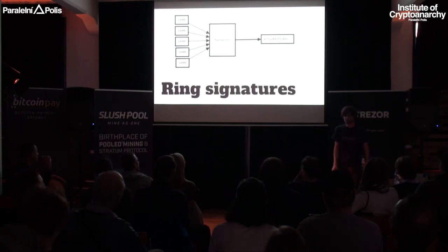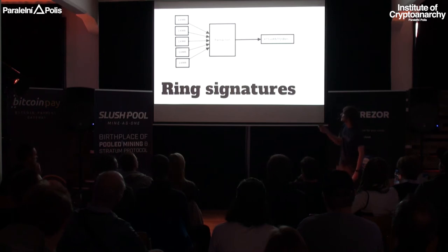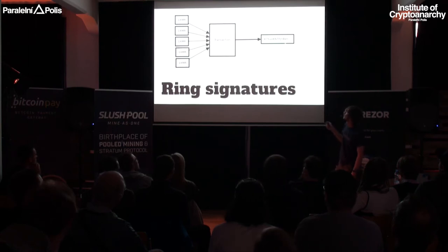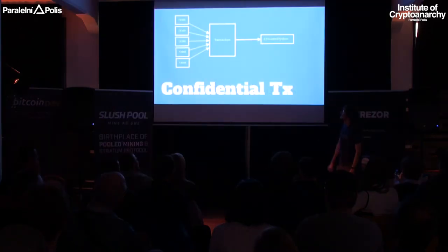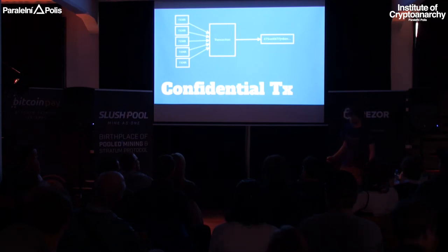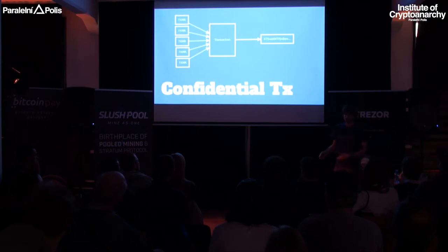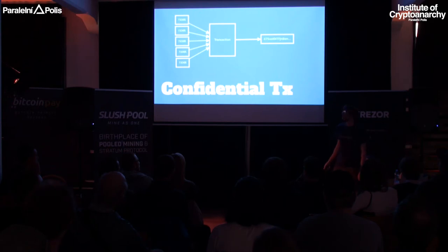This is how a transaction looks in the Monero blockchain. You see there are several inputs, but only one of them was actually used, and there is an output. After a recent upgrade to Monero, the amount is hidden too. This technology is called confidential transactions. I won't explain how it works because it's a bit of higher math and there's not much time, but if you want to learn it, I suggest you Google that term.